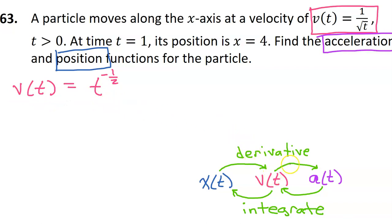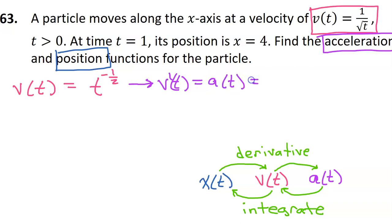If I want to get from velocity to acceleration, I need to take the derivative. So the derivative of velocity is going to give me my acceleration function. We can simply do the power rule: take this negative 1/2 and put it in the front, and then subtract 1 from this exponent, so we're going to end up with negative 3 over 2. So this is the acceleration function.